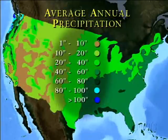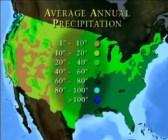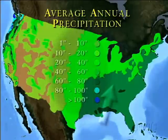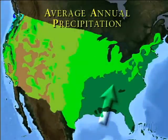Moisture source is why, as you move east from the Great Plains, you find higher average annual rainfall rates. It's that good old Gulf moisture they talk about on the TV weather show.